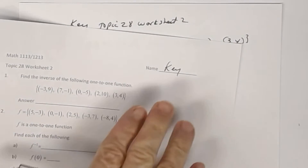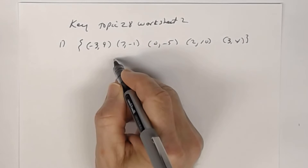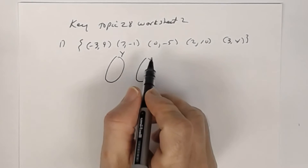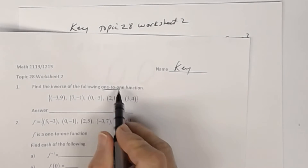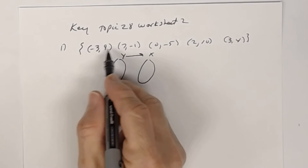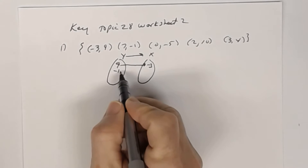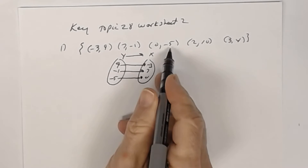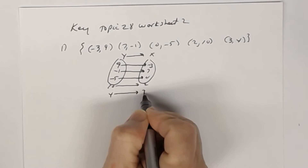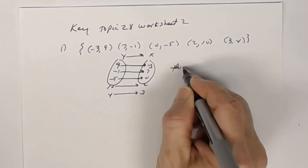You're told it's one-to-one, but let's see why. When determining if a set of ordered pairs is a one-to-one function, we do the mapping starting with y. The definition of a one-to-one function says that for each y, there's exactly one x. So when x is 9, y is -3; when x is -1, y is 7; when x is -5, y is 0; when x is 10, y is 2; and when x is 4, y is 3. For each y-coordinate there's exactly one x-coordinate, so it's one-to-one.